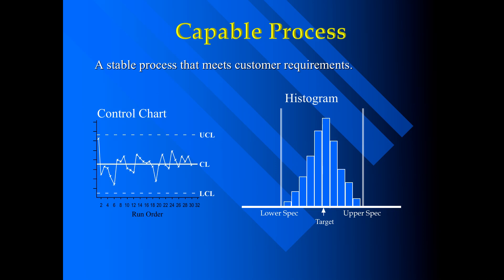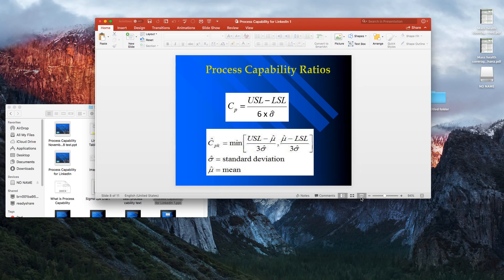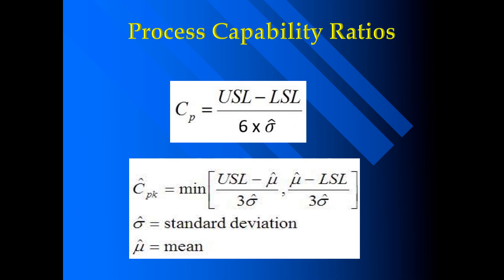If the process is capable, all of the points lie between the upper control limit and lower control limit, and we can say that the process is stable. The formula for CP is the difference between the upper specification limit and lower specification limit divided by the process spread, i.e. 6 times the standard deviation.